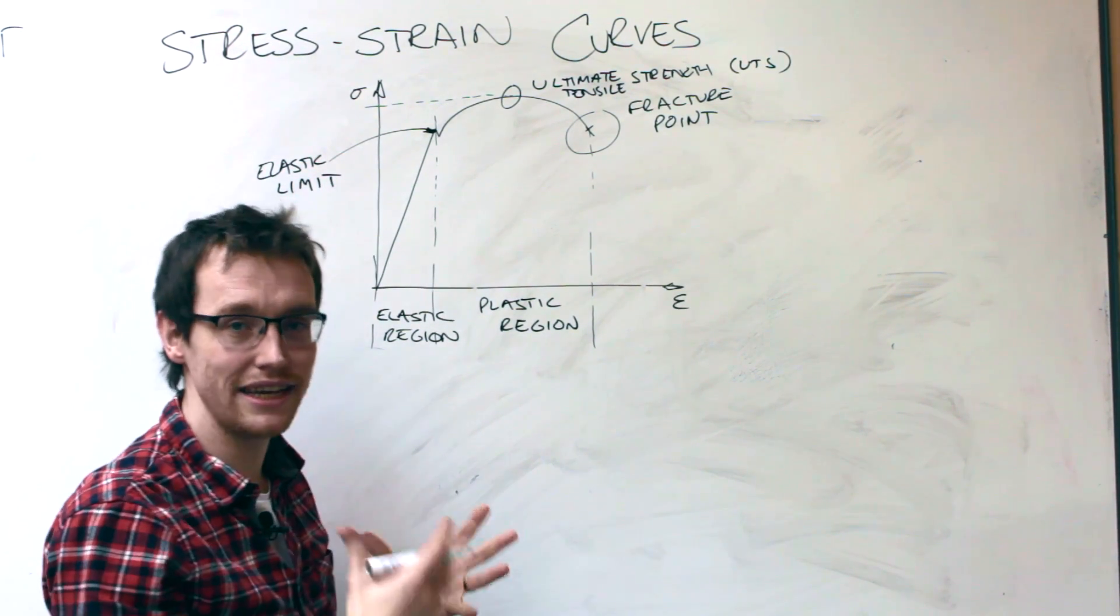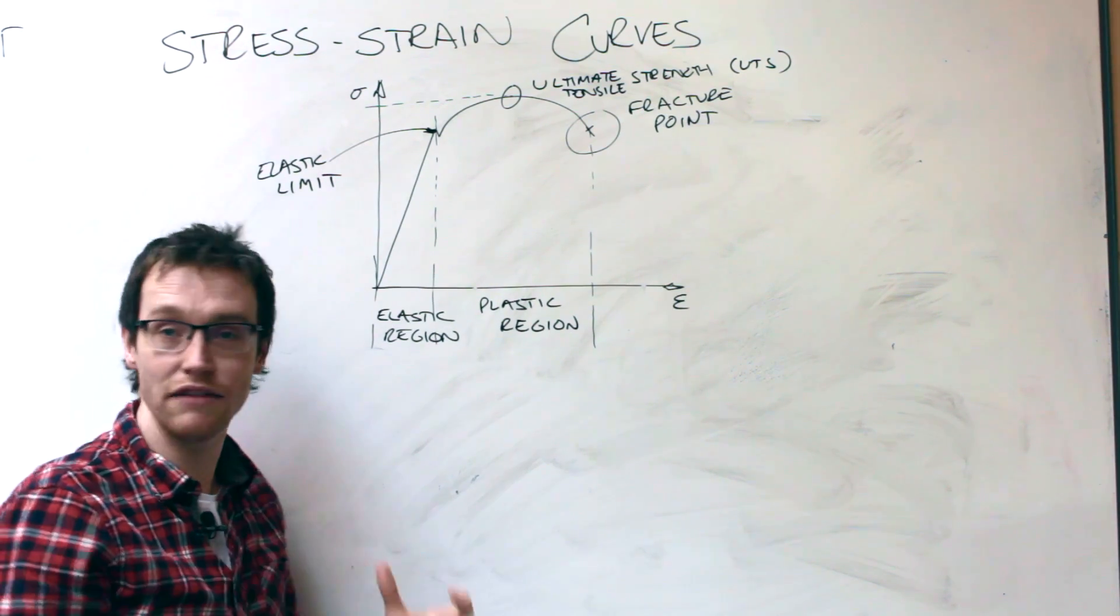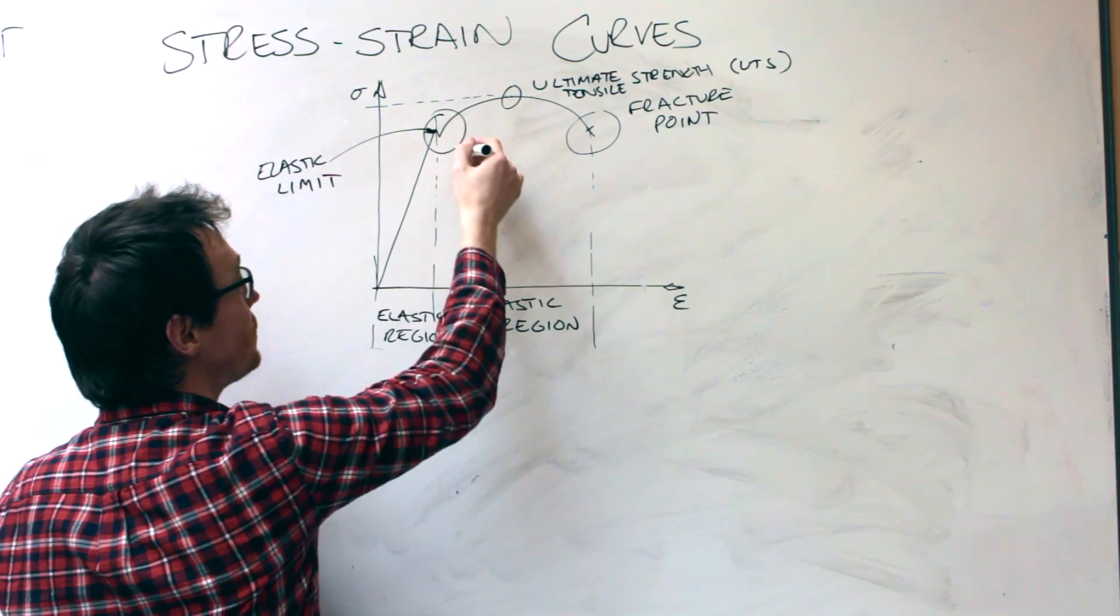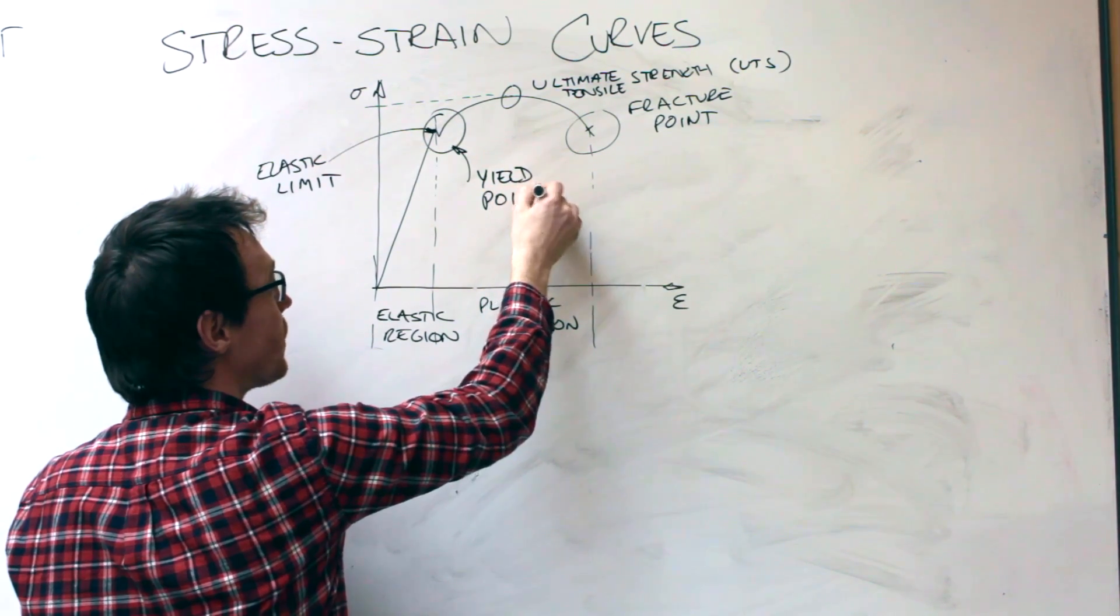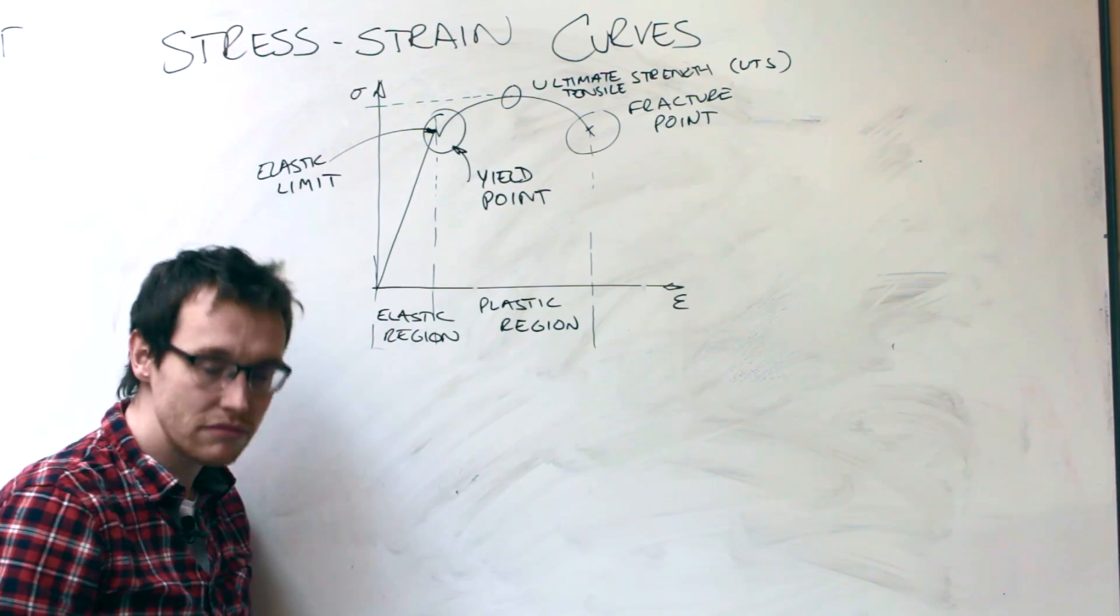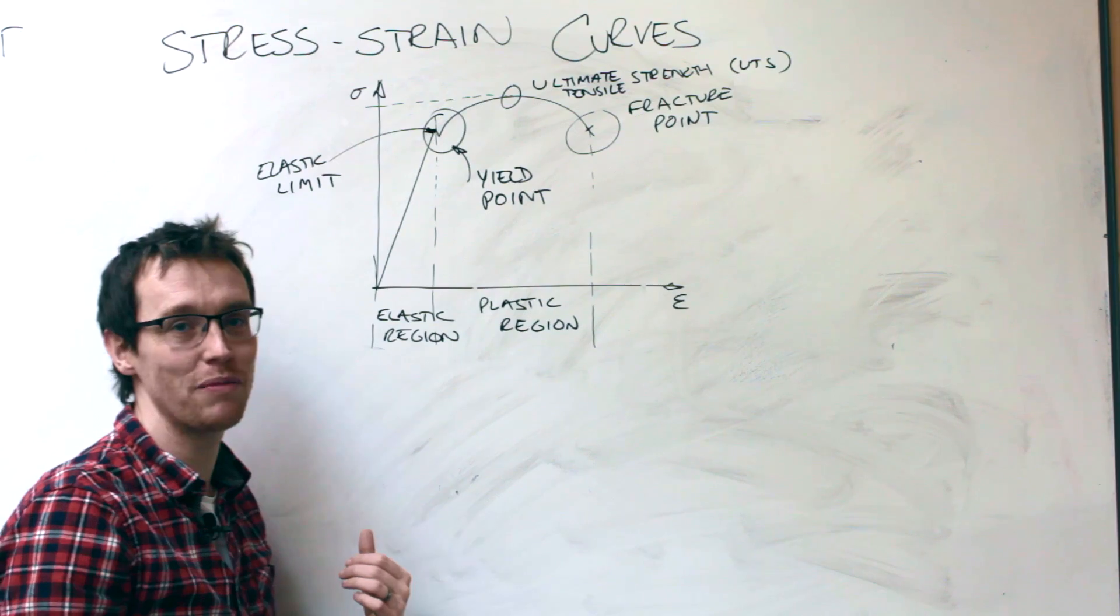And shortly after that point is the yield point, where the material gives up the ghost. So at the yield point, it becomes plastic. The material has given up and will never go back to how it was.